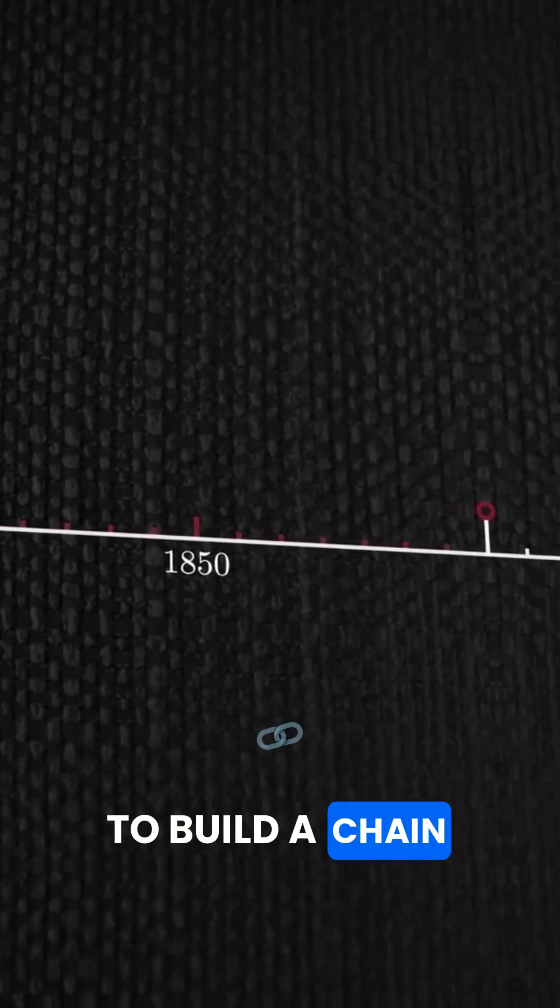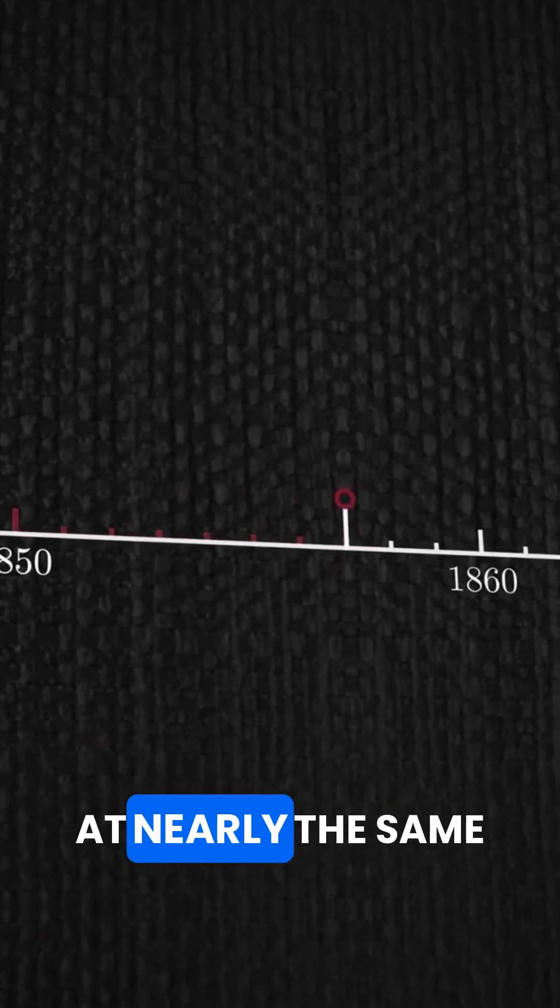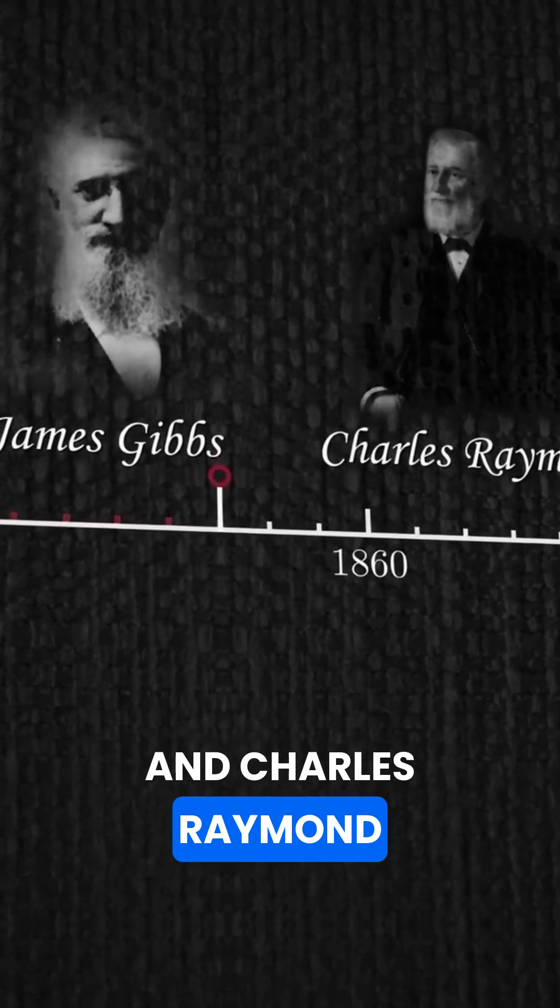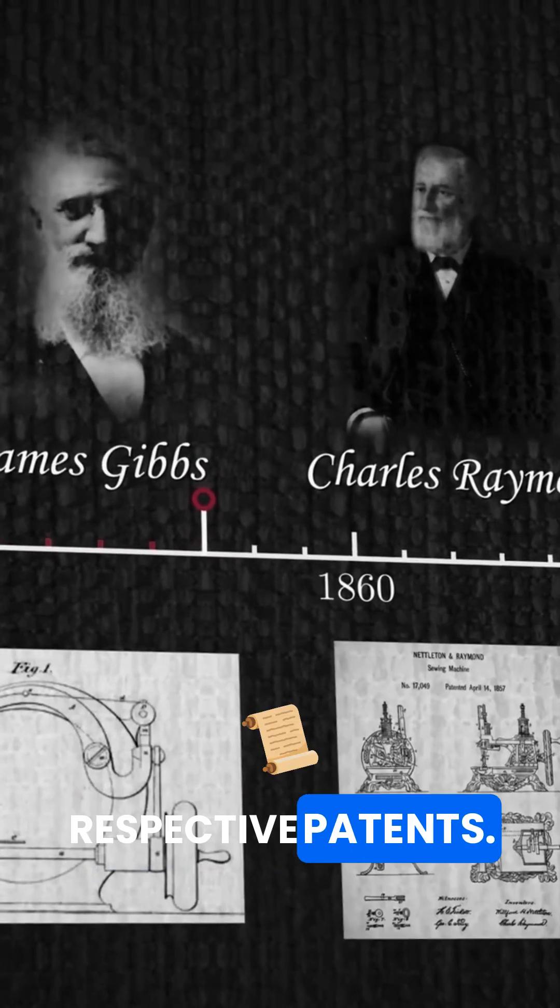The two most reliable ways to build a chain stitch machine were invented at nearly the same time in 1857, when James Gibbs and Charles Raymond received their respective patents.